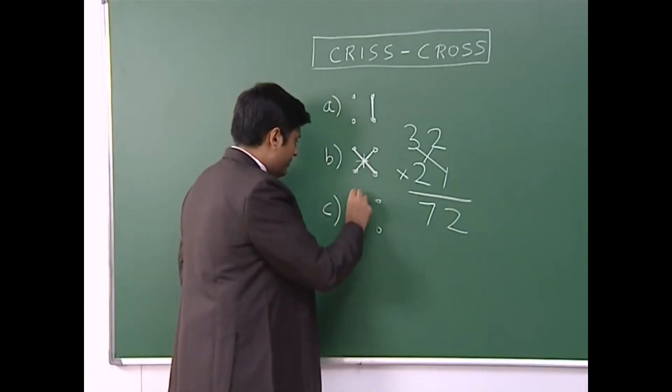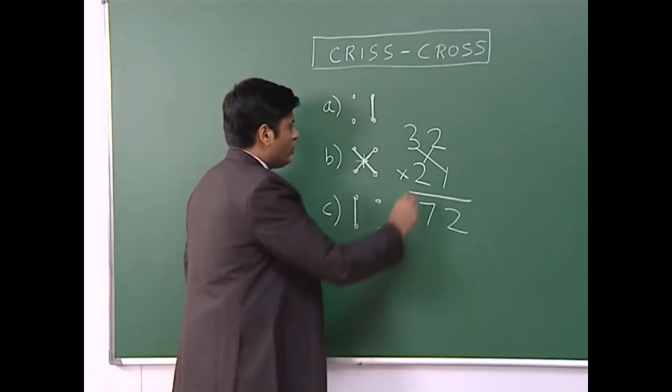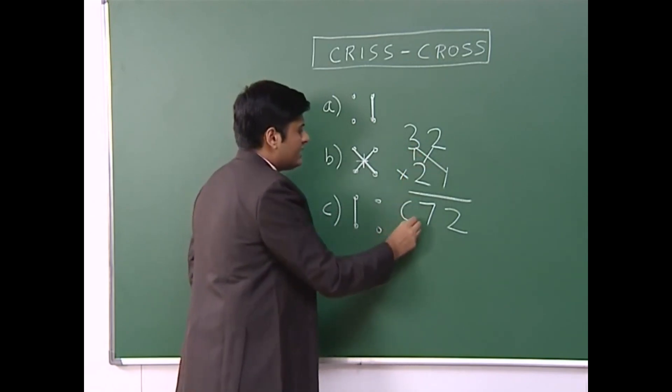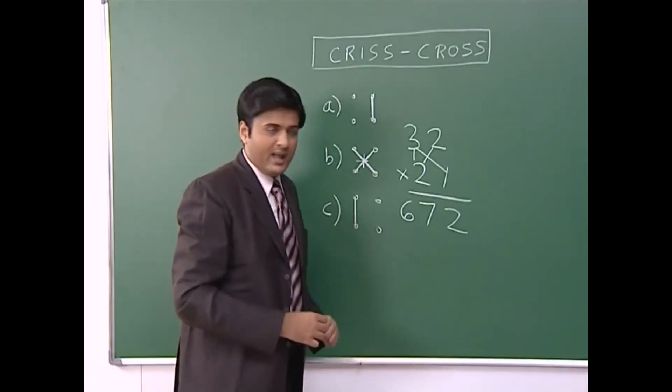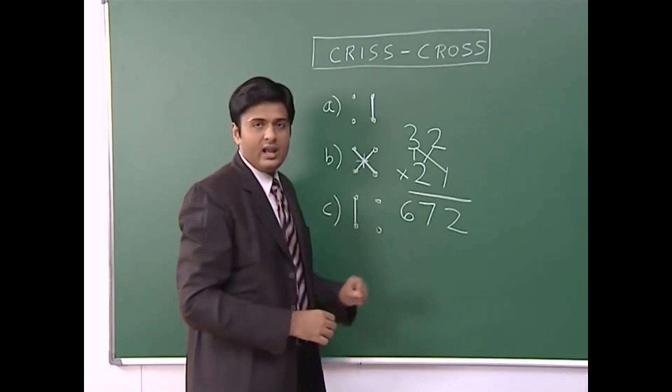Last step says multiply these two numbers. So 3 times 2 is 6. My answer in this case is 672. This is the beauty of Vedic Maths. You can get the answer in only one line.